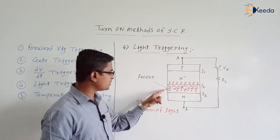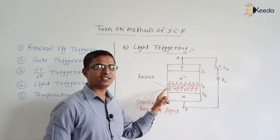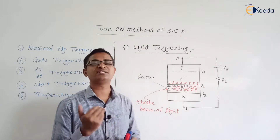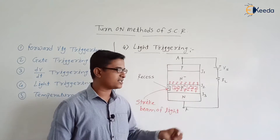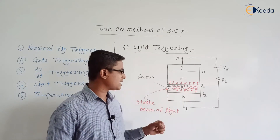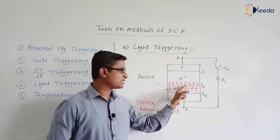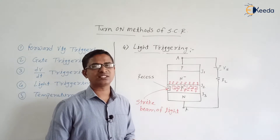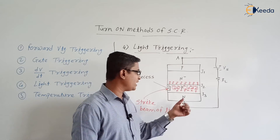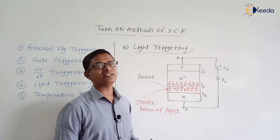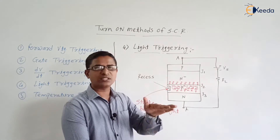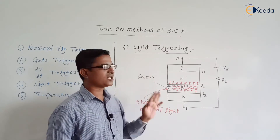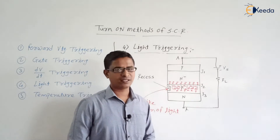Due to the beam of light striking at the inner recess, in the inner P-type layer we will have the generation of additional charge carriers. Due to these additional positive charge carriers in the P-type layer, these charges will be recombining with the negative charges present at the depletion layer across junction J2. When these negative charges recombine with the additional charge carriers, it helps in reducing the width of the depletion layer across junction J2. This is nothing but the light triggering.